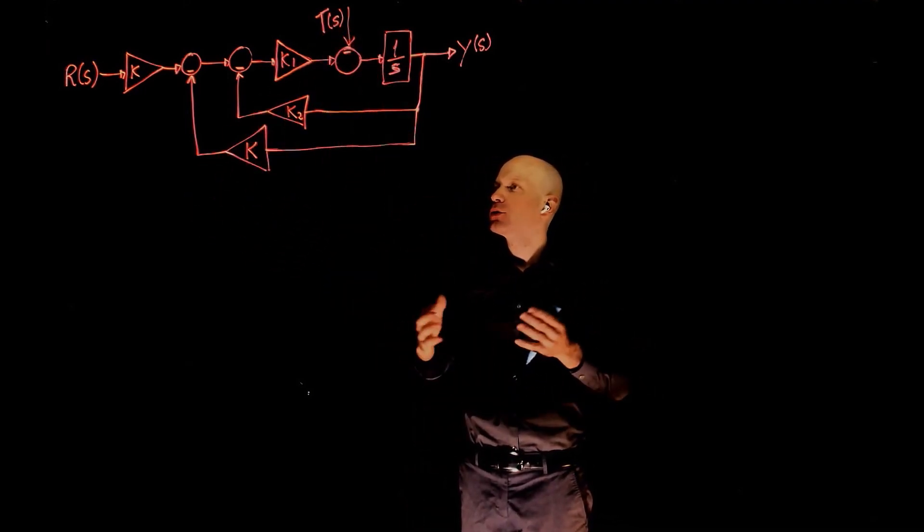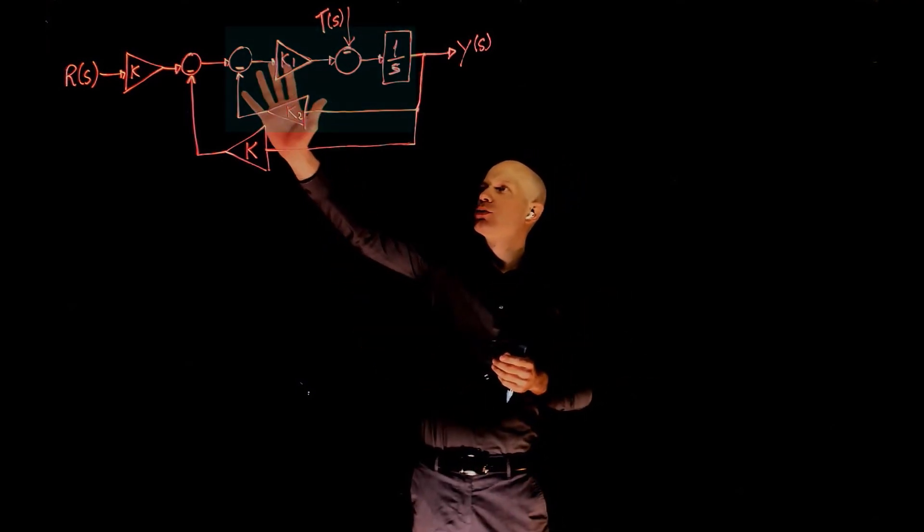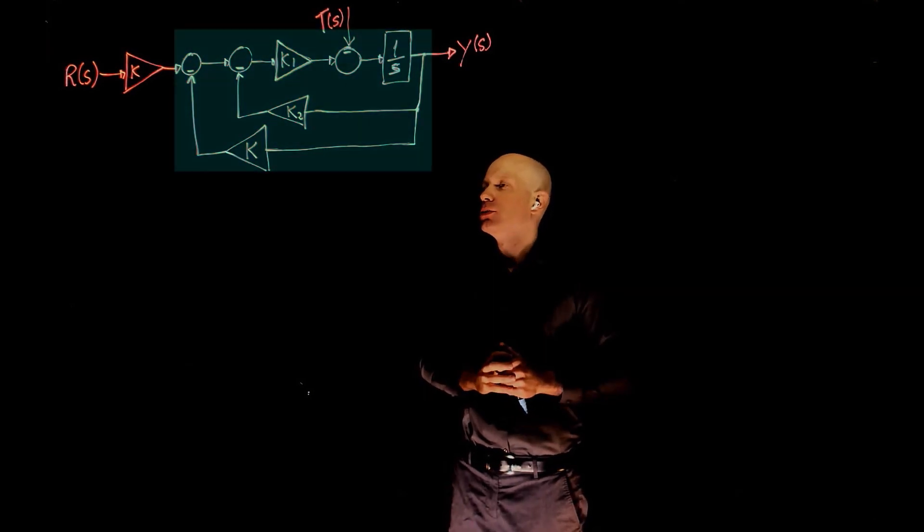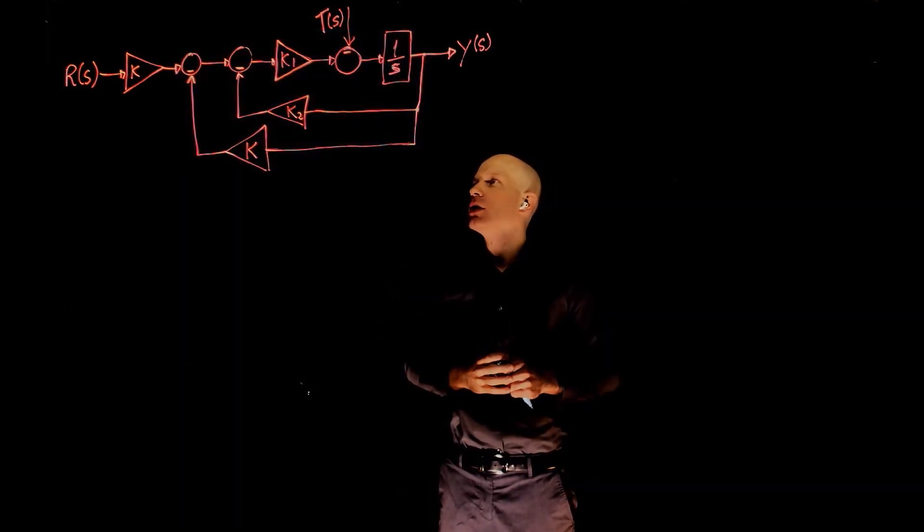By doing that, we have two simple feedback loops to solve for. The first one is this one here, and the second one is the outer loop. Let's start with the inner feedback loop.